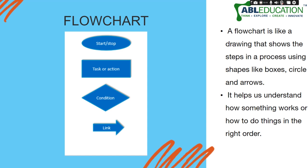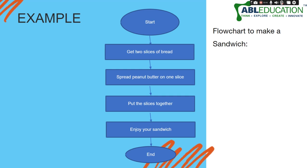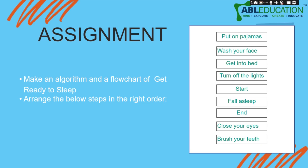A flowchart is like a sandwich where you create one layer after another and give orders to your computer. For example, here is a flowchart for making a sandwich: first we start, then get two slices of bread, then spread peanut butter on one slice, then put the slices together, and finally enjoy your sandwich. These six steps represent the algorithm to make a sandwich. An algorithm is simply a set of instructions to follow to complete any task.